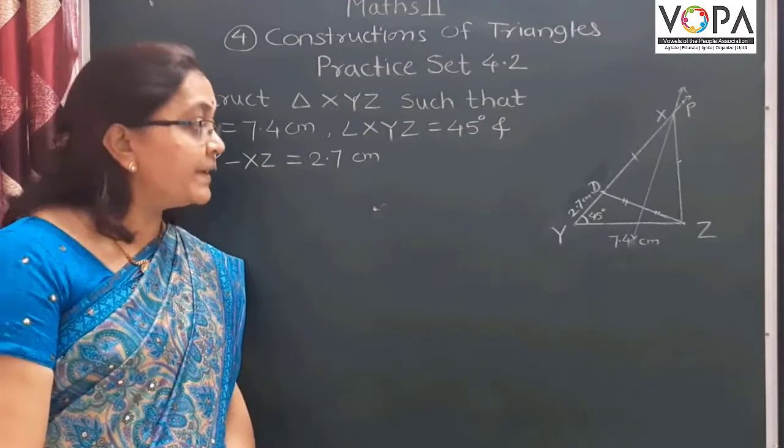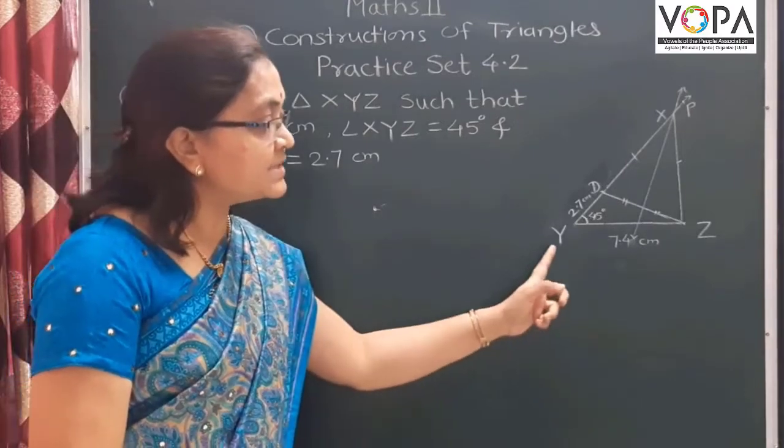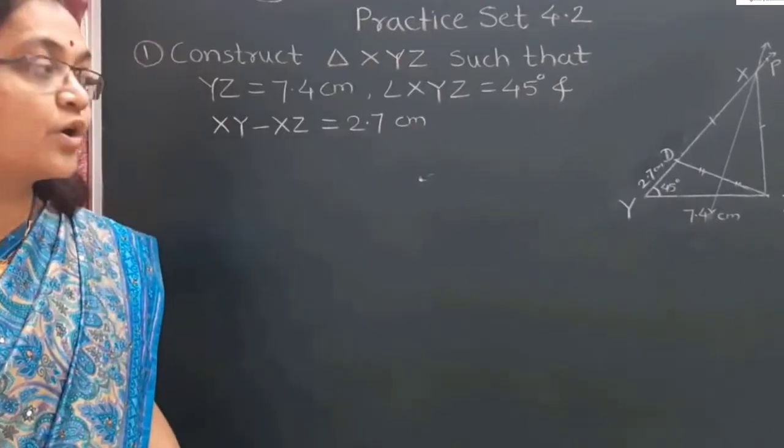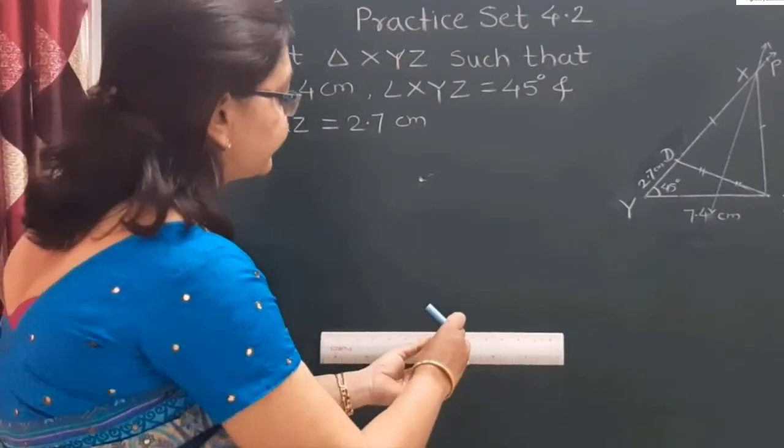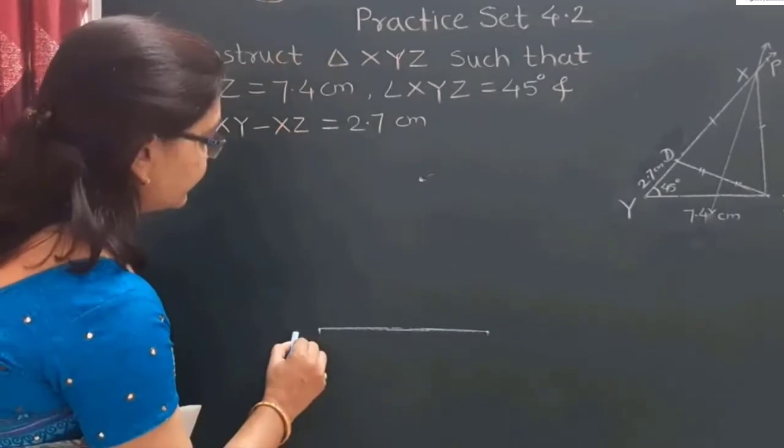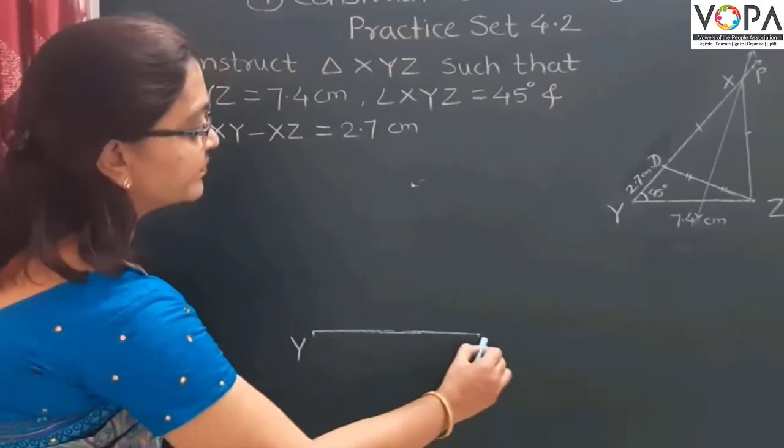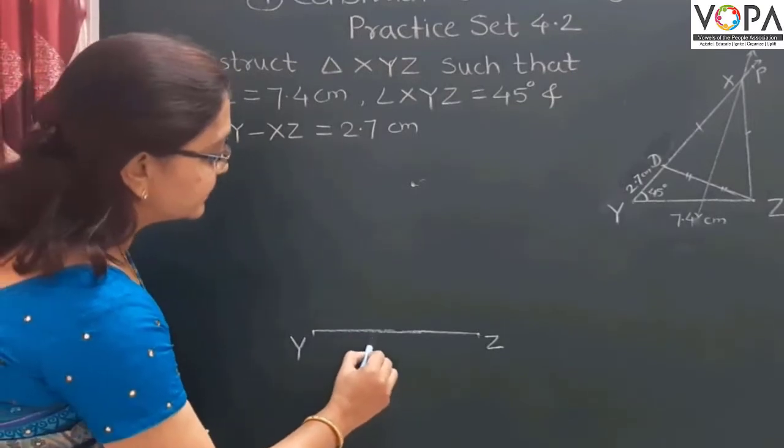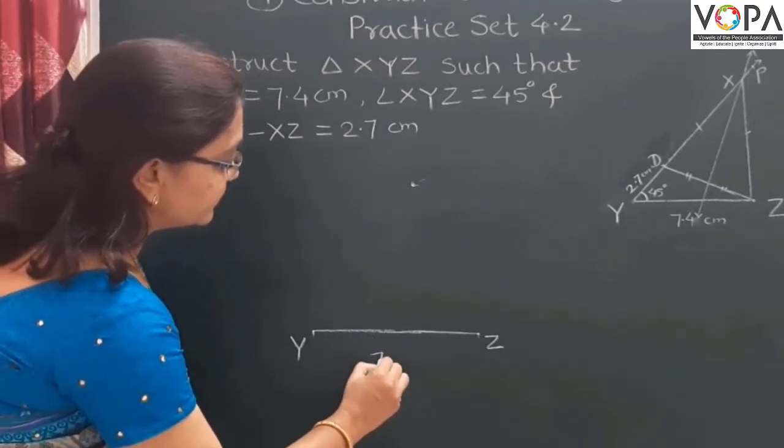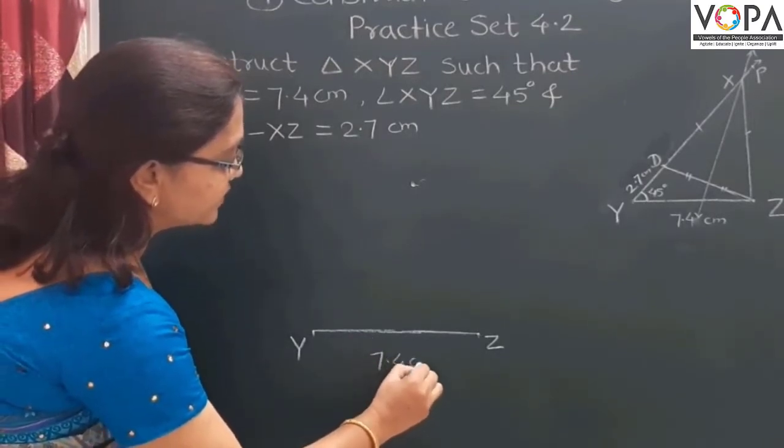First, draw the base of the triangle. Here, the base is YZ. Draw segment YZ. This is our segment YZ having length 7.4 cm.